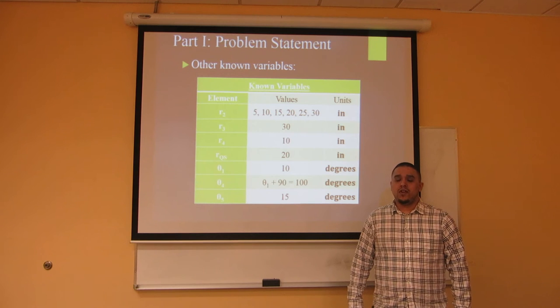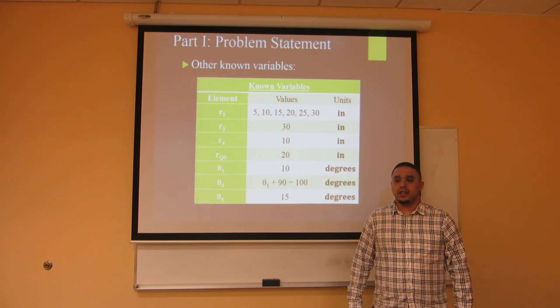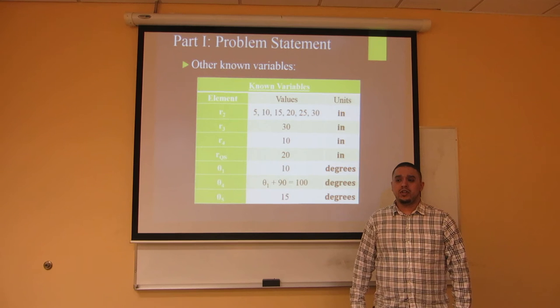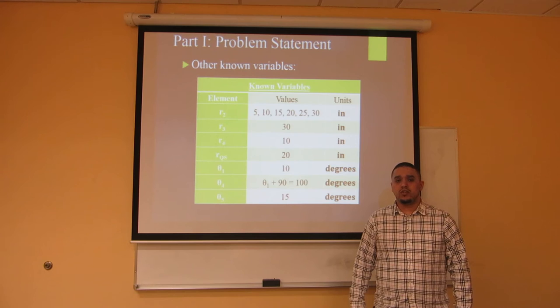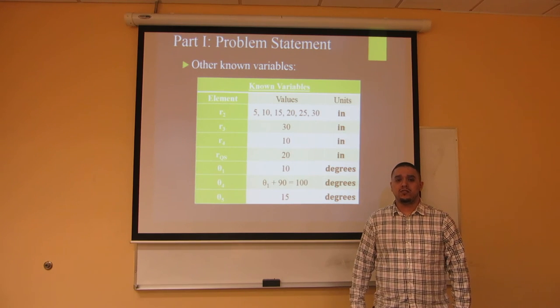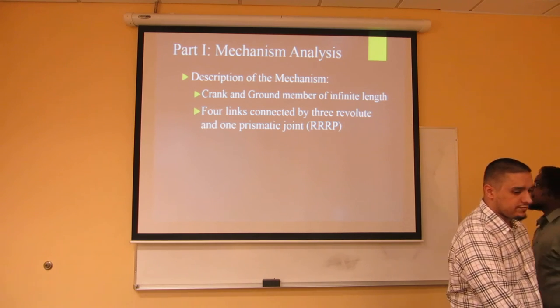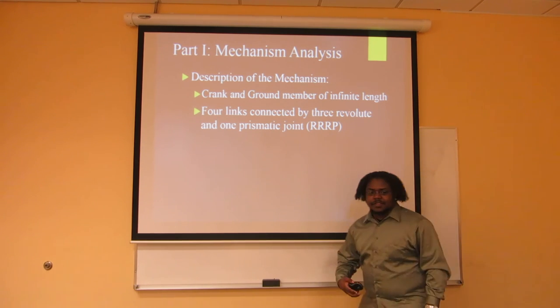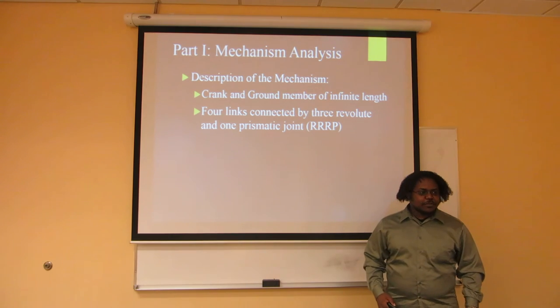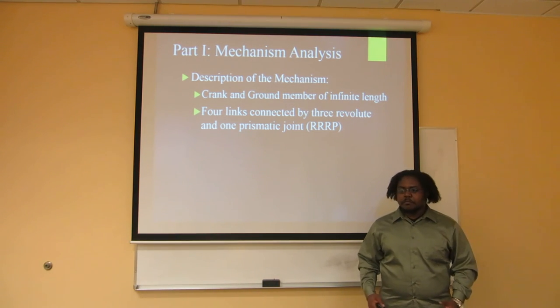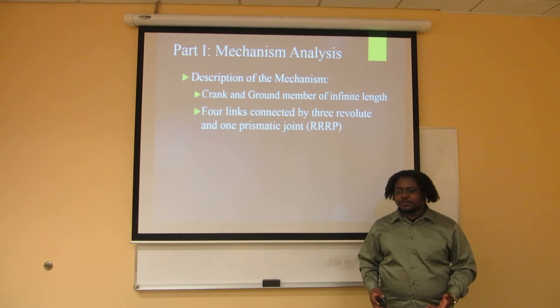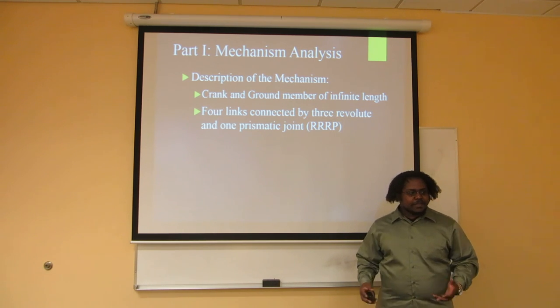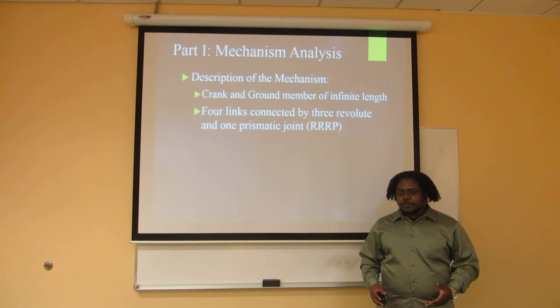The other known variables are the link lengths R2, R3, R4, the link length between points Q and S, and their respective theta values. A slider crank mechanism is similar to a four bar mechanism, but the only difference is that a slider crank mechanism has a crank and ground member of infinite length and is also joined by three revolute joints and one prismatic joint.